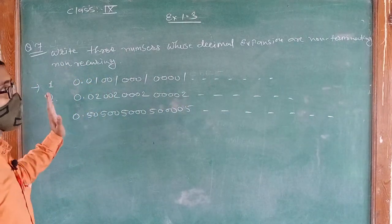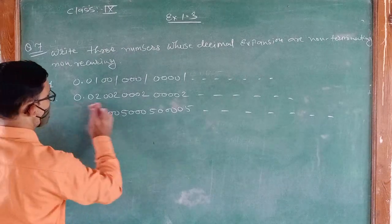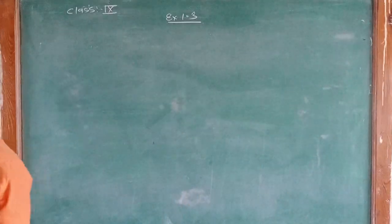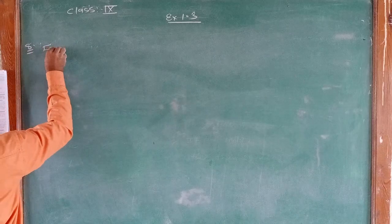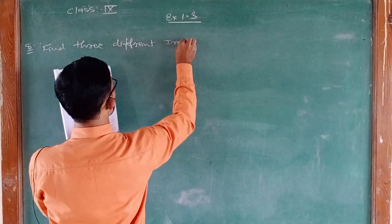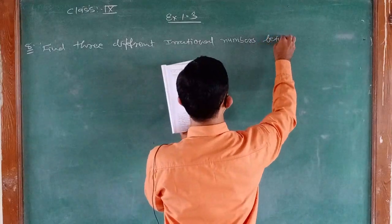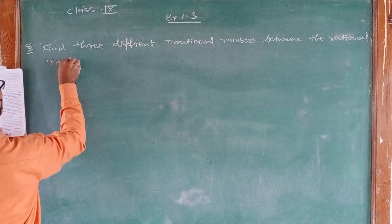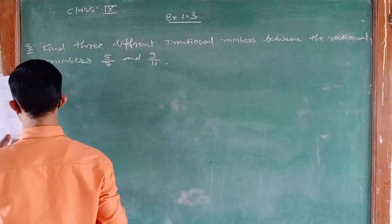So these are our three non-terminating non-recurring numbers. Moving on, the next question is Question number 8: Find three different irrational numbers between the rational numbers 5 upon 7 and 9 upon 11.